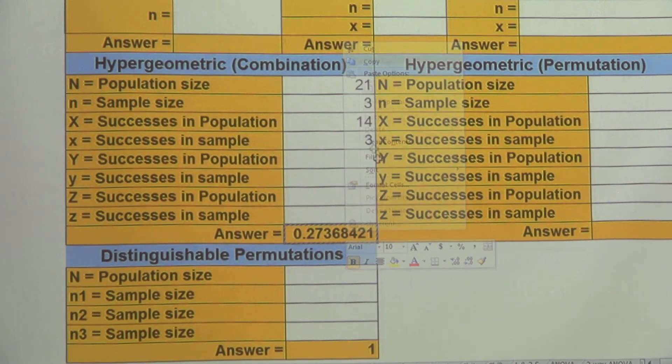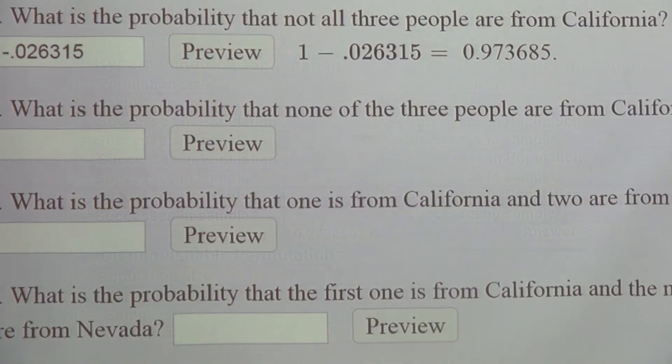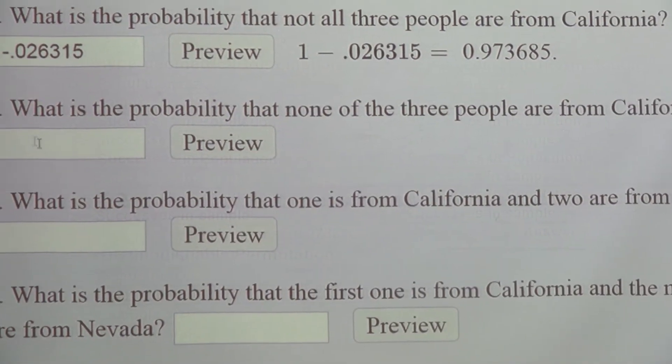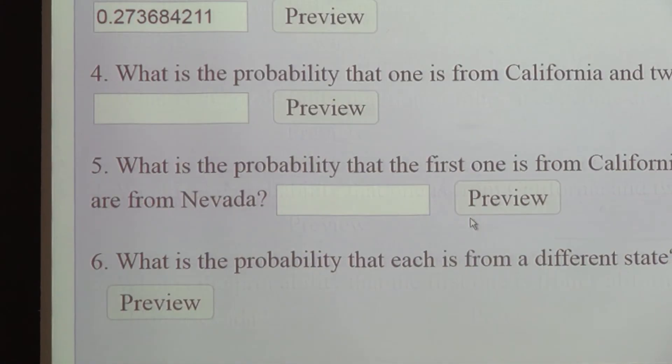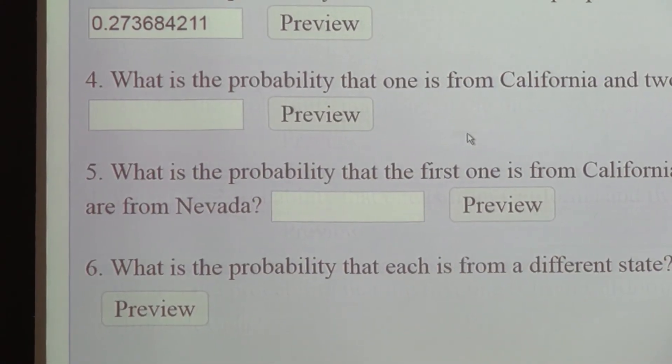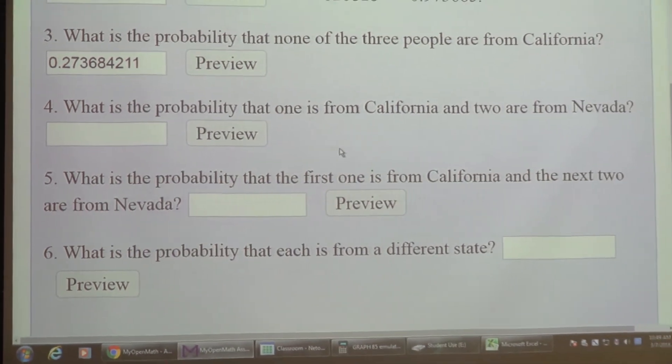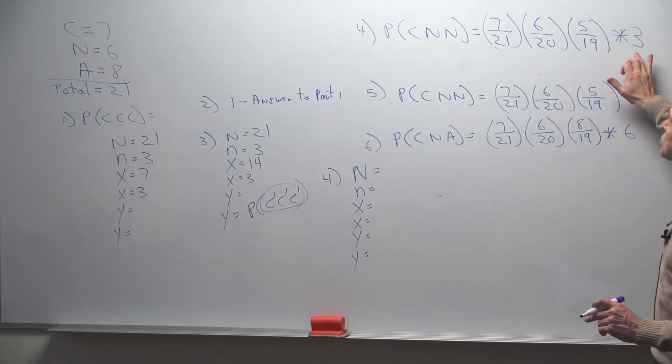Let me copy that. And if we check it, right here is where that goes. So I'll go ahead and paste that in. This one, what is the probability one is from California and two are from Nevada? This is problem four.